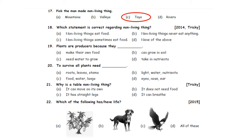Eighteenth: Which statement is correct regarding non-living things? Option A: Non-living things eat food. Option B: Non-living things never eat anything. Option C: Non-living things sometimes eat food. Option D: None of the above. Non-living things never ever eat any food. So, Option B — non-living things never eat anything — is the correct answer.